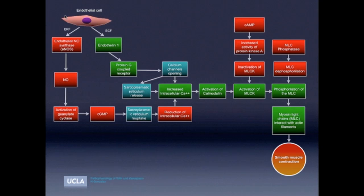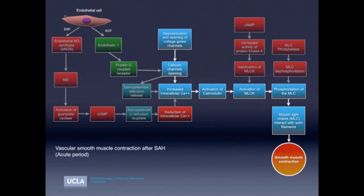Now, during subarachnoid hemorrhage, the vascular smooth muscle contraction occurs in pathological conditions in two periods: an acute period and a delayed period. The initial phase of vasospasm after subarachnoid hemorrhage is calcium-dependent and is due mainly to the abnormal depolarization and opening of the voltage-gated channels that induce an increase in the intracellular concentrations of calcium.